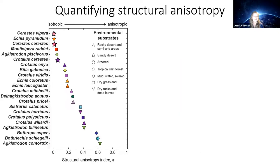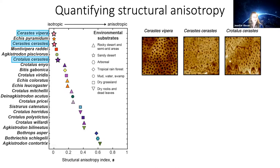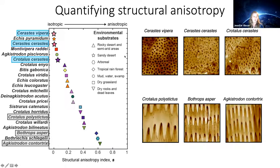We calculated this for all individuals in our sampling and found a wide range of values. Our three sidewinding specialists have pretty low values — small structural anisotropy. In comparison, three others with higher structural anisotropy have prominently featured spikes pointed from head to tail.